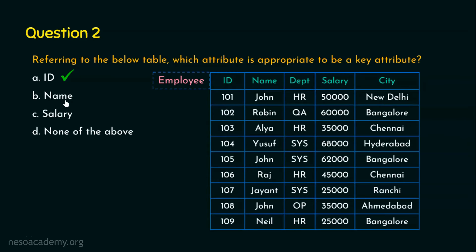We are not preferring name as a key attribute because many employees may have the same name. At the same time, many employees may have the same salary structure. That's why the attribute ID is appropriate to be a key attribute. We are done with question number two.